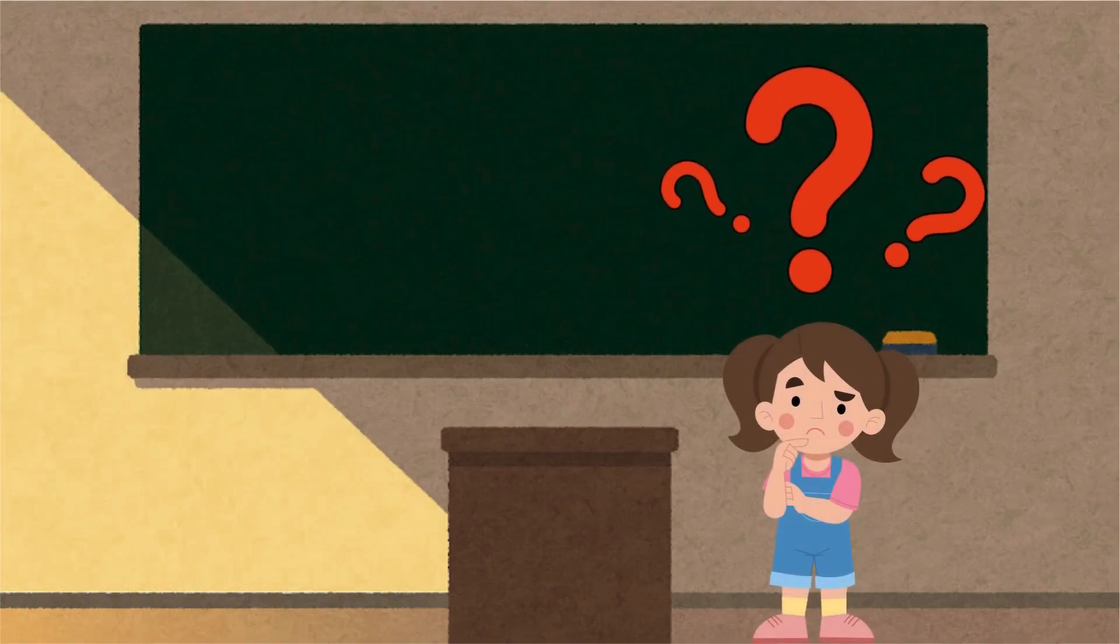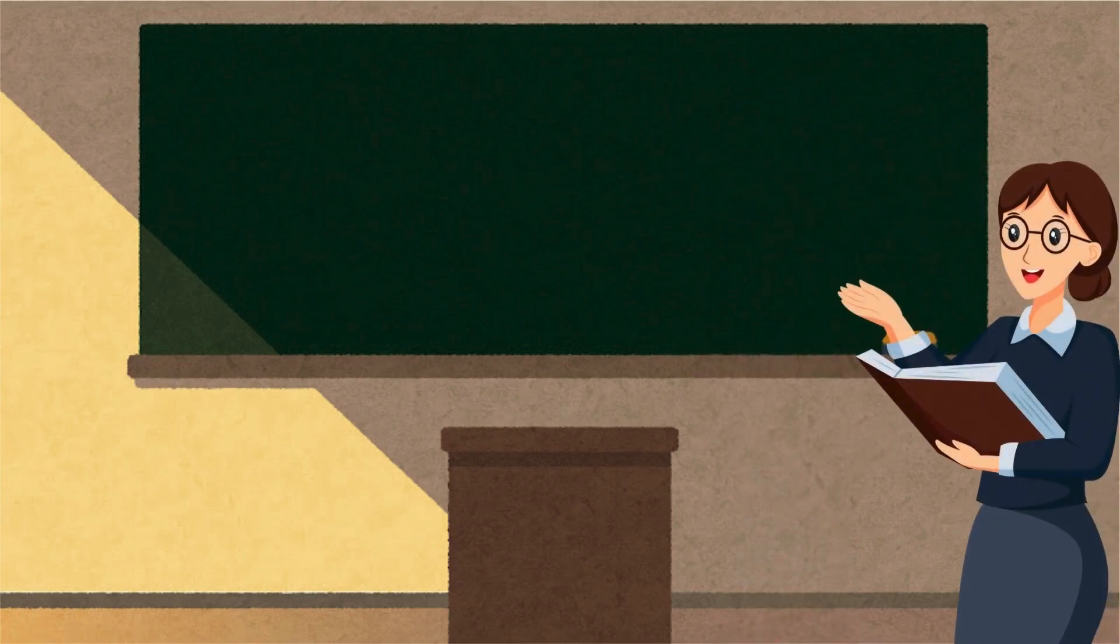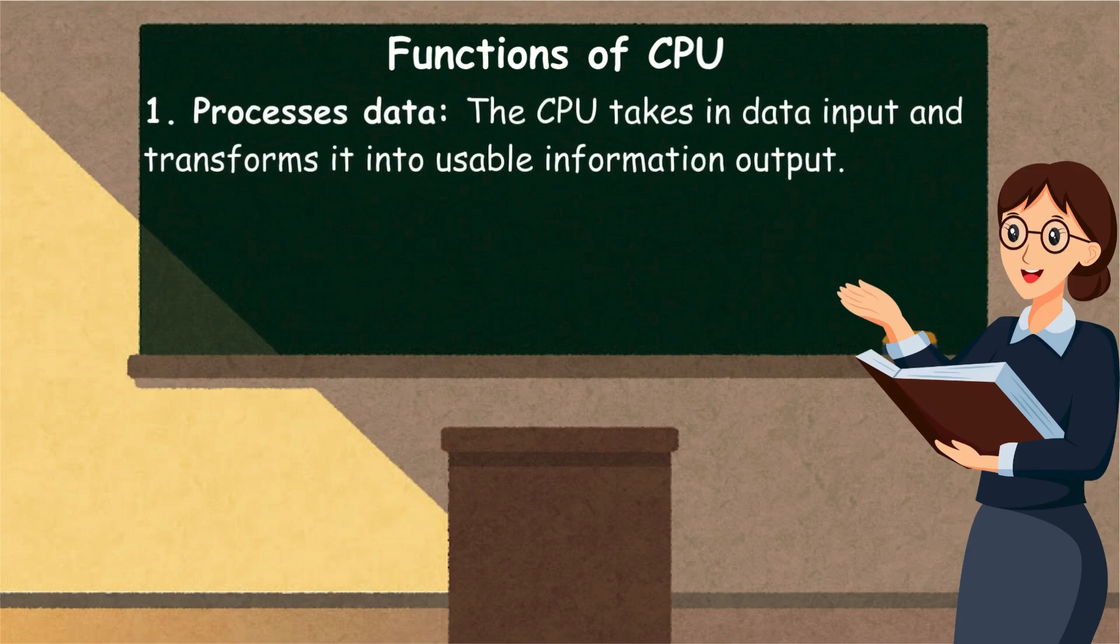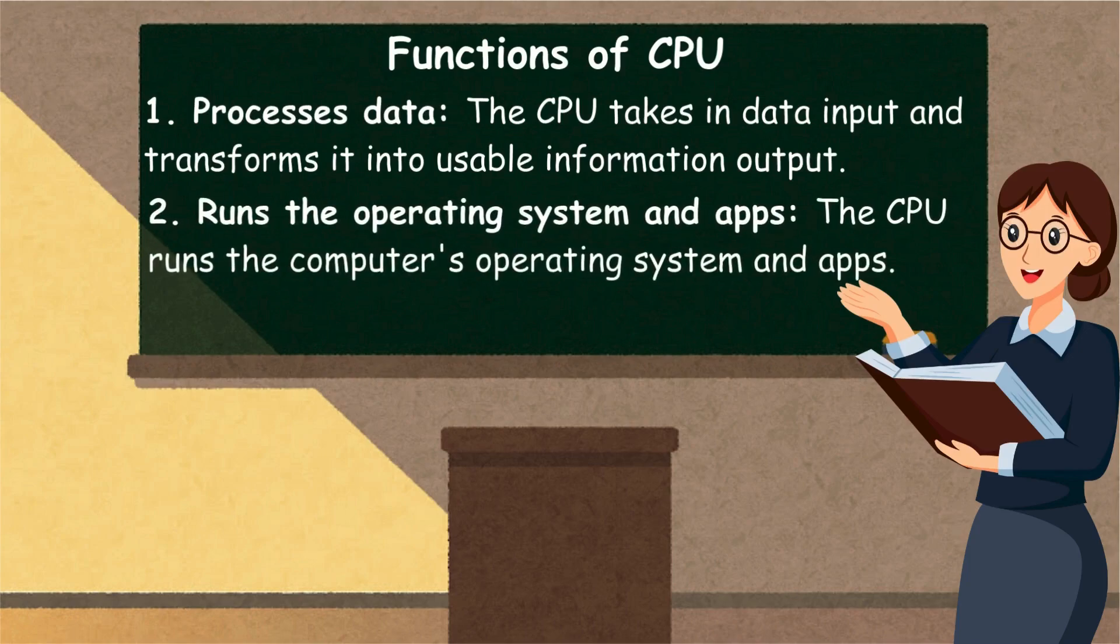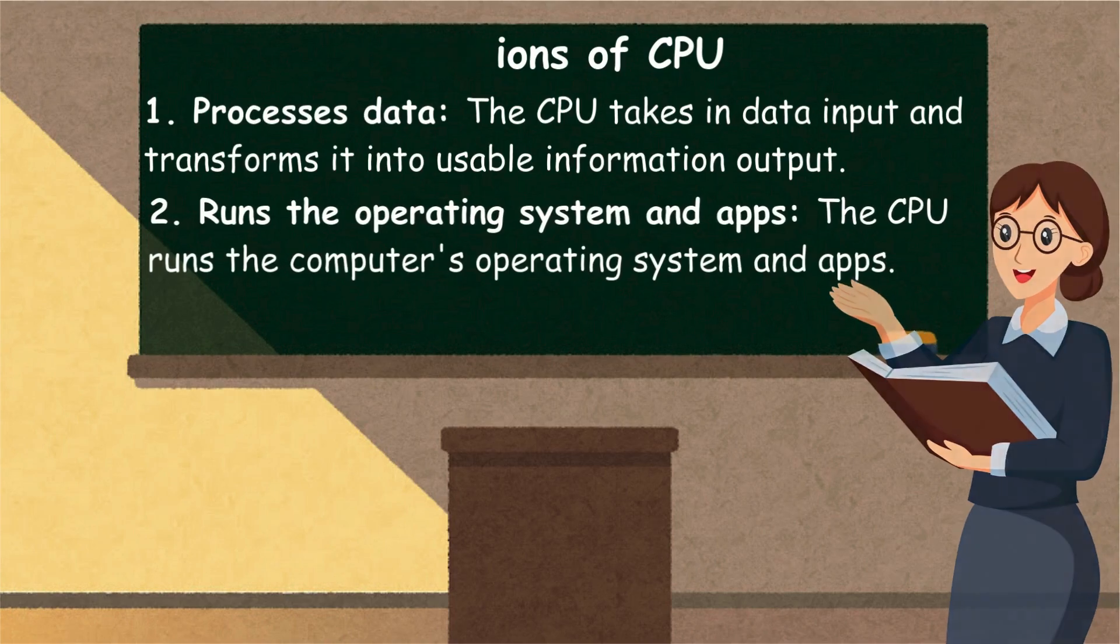But, what are the functions of CPU? The functions of CPU are. One, it processes data. The CPU takes in data input and transforms it into usable information output. Two, it runs the operating system and apps.